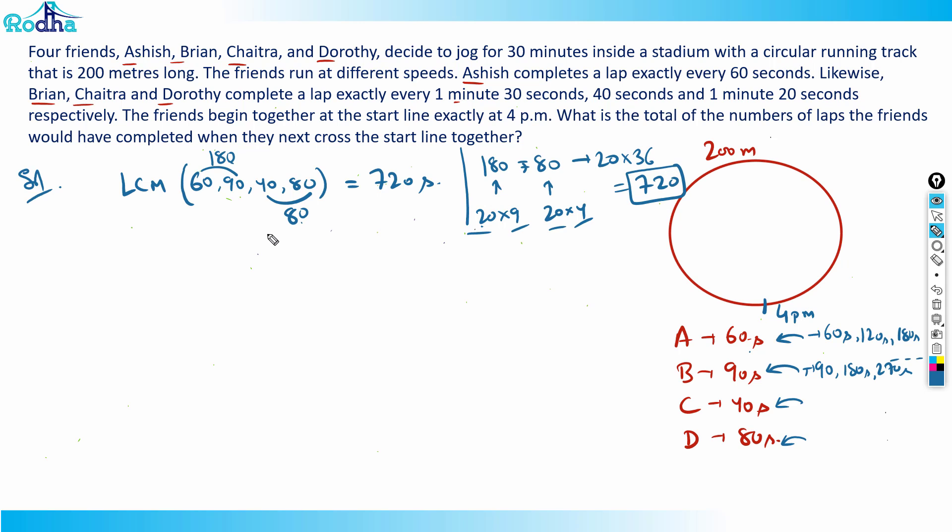720 seconds actually means 12 minutes. They started at 4 pm, so at 4:12 pm they'll all be together.